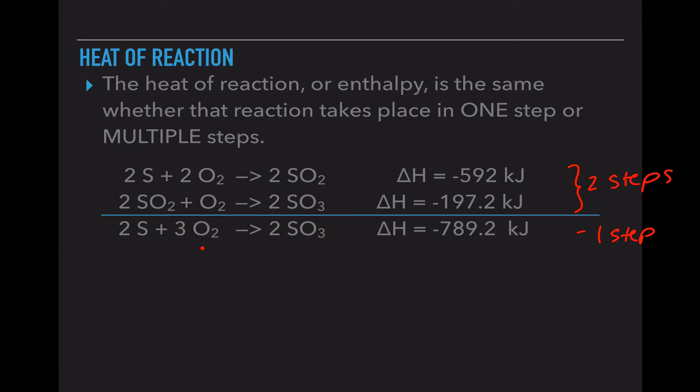This second step of finding the product of sulfur trioxide releases an additional 197.2 kilojoules. So if we take a shortcut here and do this all in one big step, we have to add up these two values to find our total enthalpy change of 789.2 kilojoules. So this is just a specific chemical reaction example of what the previous slide stated.